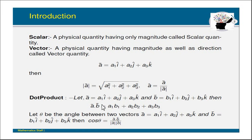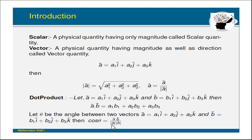Now, the angle between two vectors. Let theta be the angle between vectors a-bar and b-bar. That angle theta can be found using the formula: cos(theta) equals a-bar dot b-bar divided by the magnitude of a-bar times the magnitude of b-bar, that is, (a-bar · b-bar) / (|a-bar| × |b-bar|).